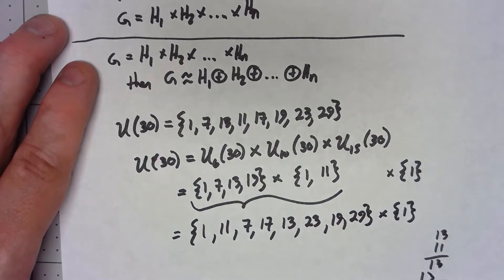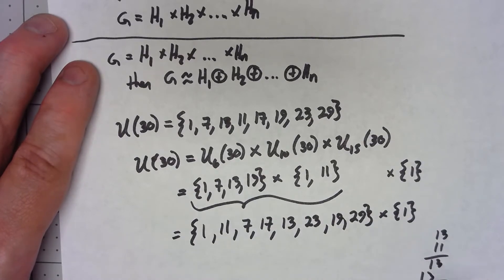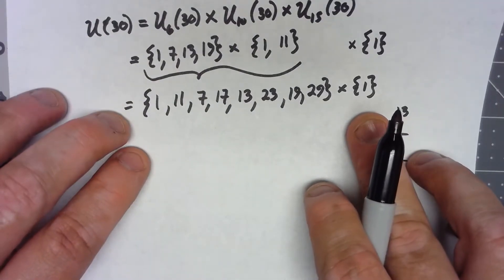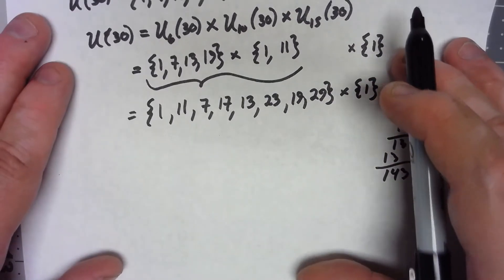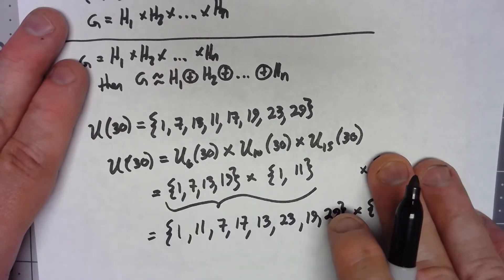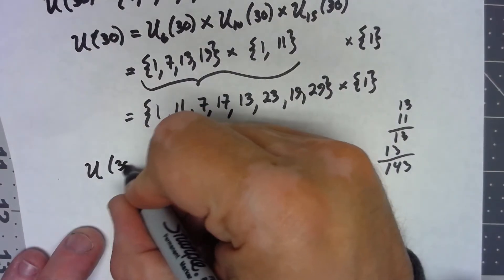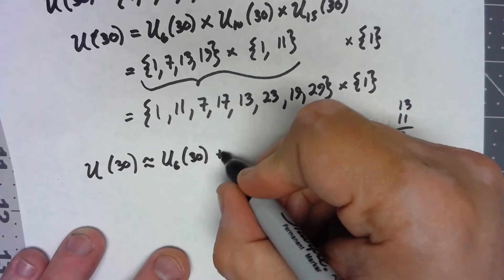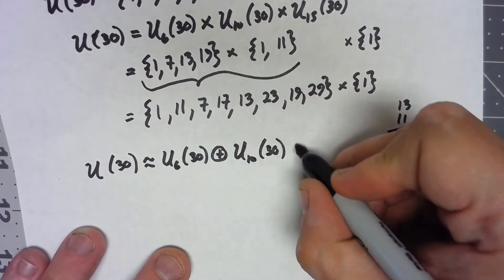Now you notice here we've already got all the elements of U30 in there, and doing the direct product with 1 doesn't really do much, but it does match our definition up here. If I take that set that I just came up with, intersect the next one we have, then just the intersection is just 1. So because this thing is the internal direct product of these three groups, then U30 has to be isomorphic to U6(30) external direct product U10(30) external direct product U15(30).